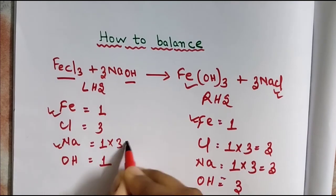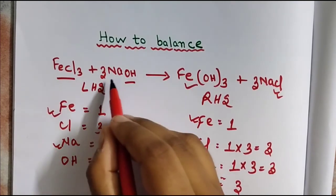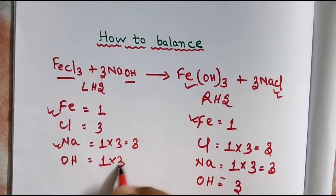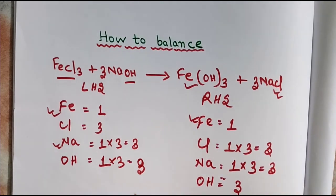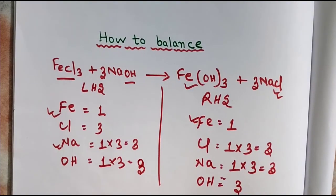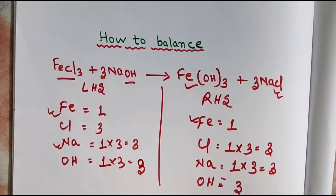And 1 times 3 gives me 3 hydroxide ions as well. So you can see the equation is balanced. Thanks for watching.